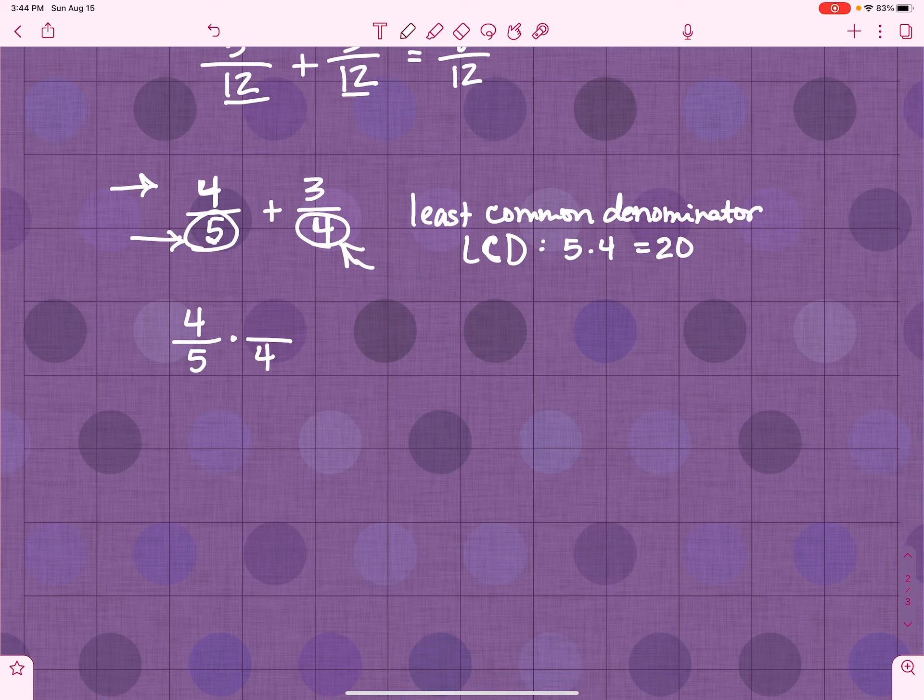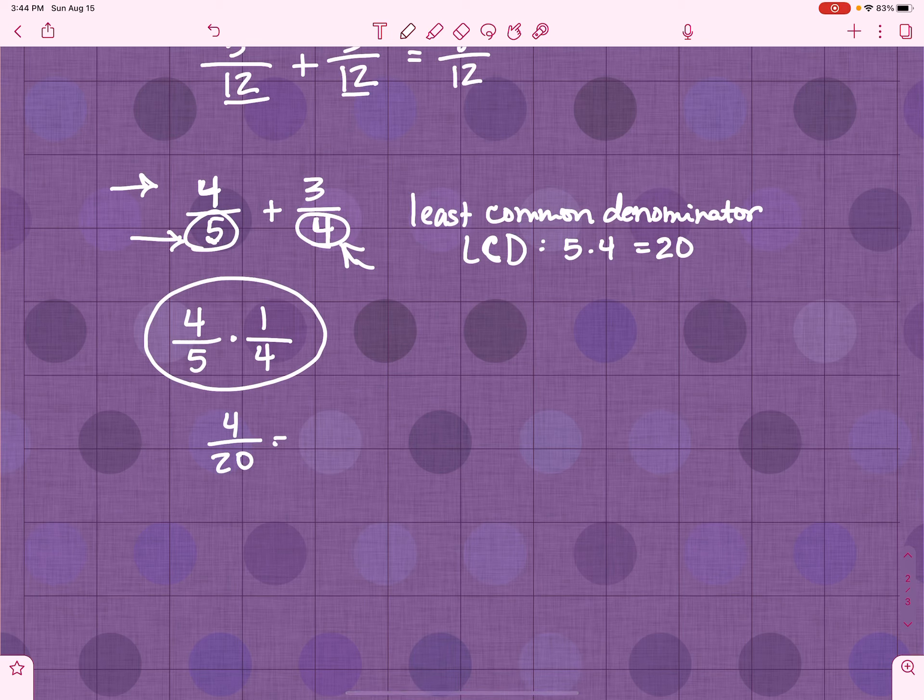Because that would change the value of it. If I just do this, that gives me 4 over 20. That is not equivalent to 4 over 5. Let me show you how I know this.